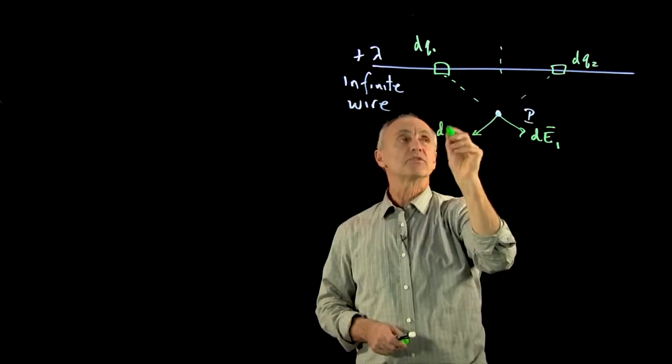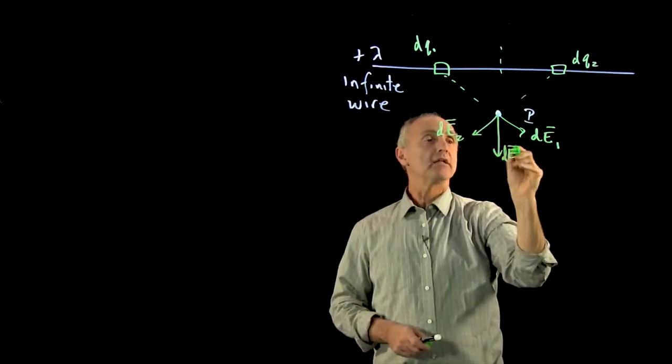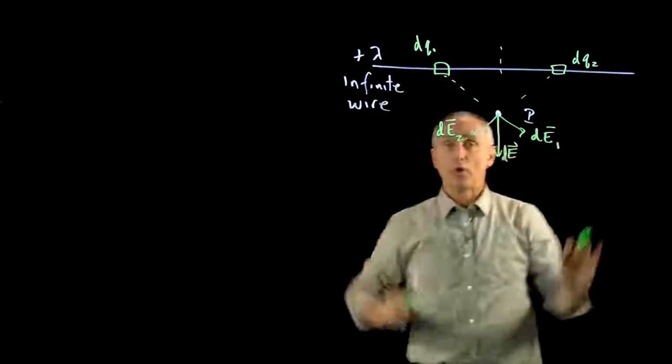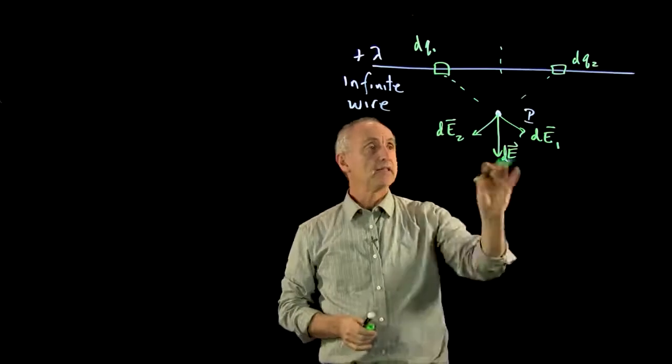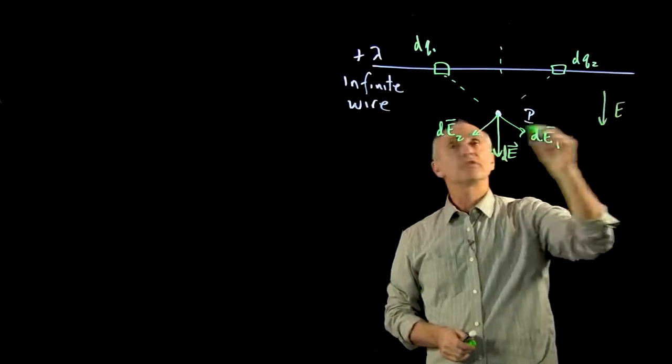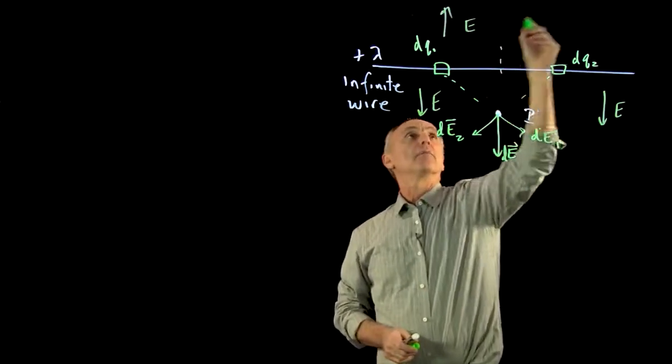And this will give us dE2. And when we add these together, we get the electric field of this pair. And I can divide the whole infinite wire pairwise. And that concludes that the electric field for this infinite wire is pointing away from the wire.